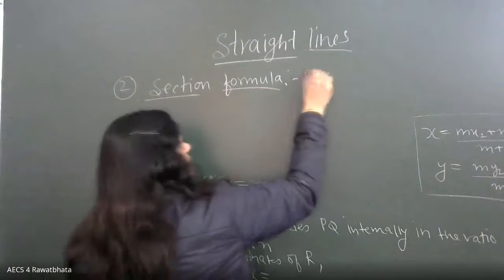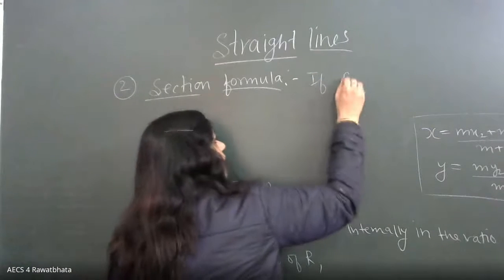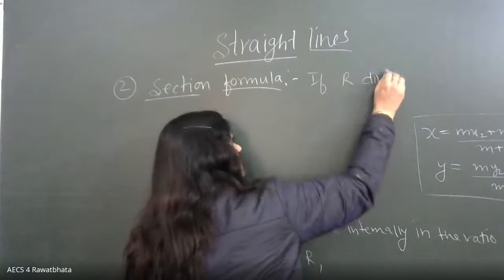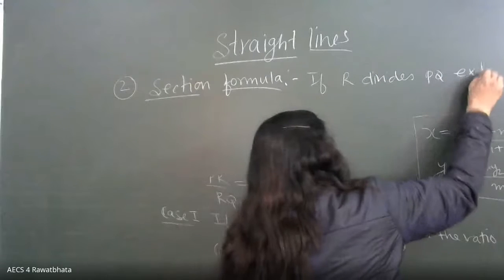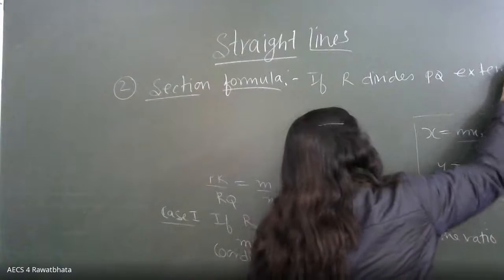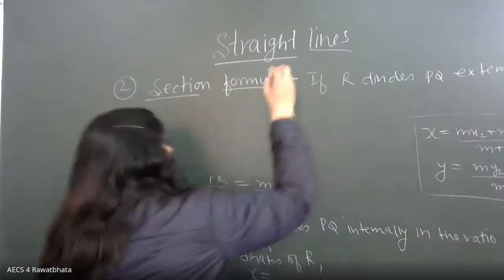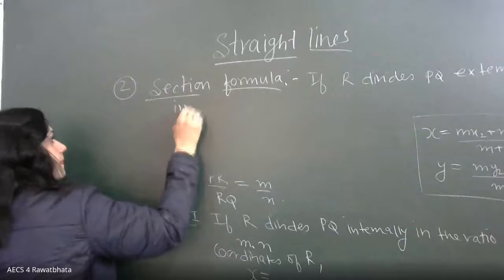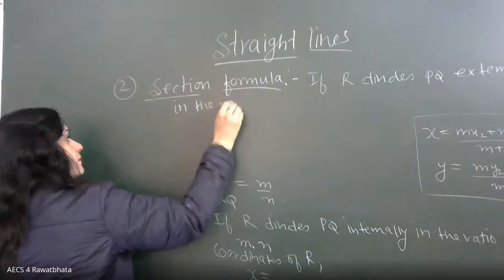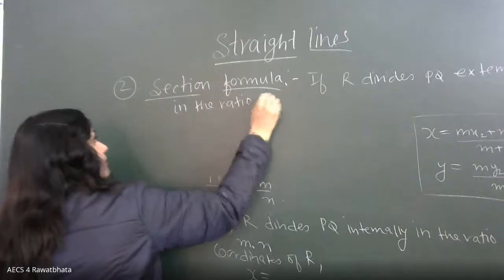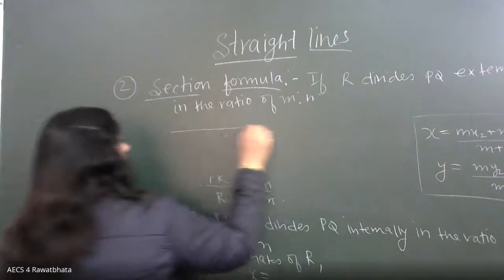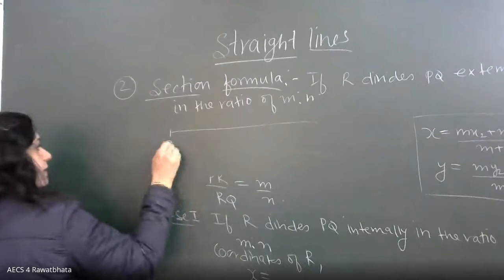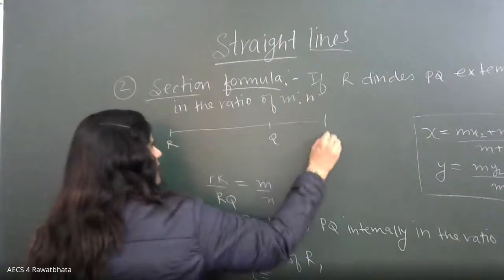So if R divides PQ externally in the ratio of M is to N, then externally how will it divide? Here P is here, Q is here, and R is here.